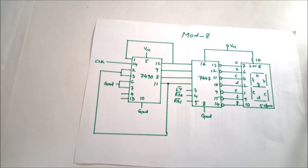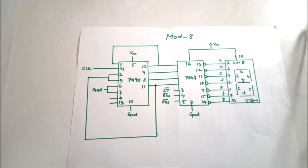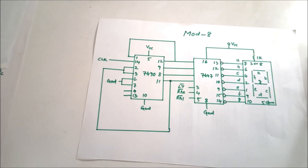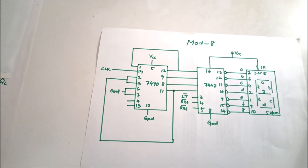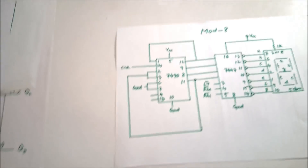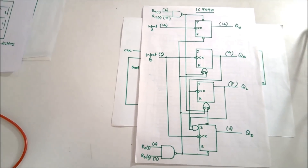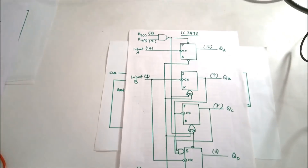Now I'll explain why it is connected this way. As I already explained in the case of mod 10, the reset pins 2 and 3, when given high, cause all 4 flip-flops to reset — the output becomes 0. Therefore, it becomes reset.